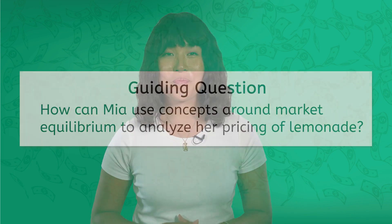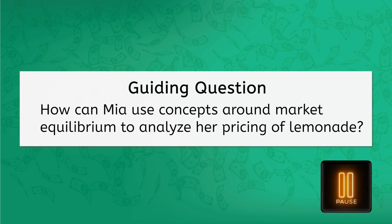Okay, let's get started with our first guiding question. How can Mia use concepts around market equilibrium to analyze her pricing of lemonade? You may want to consider market occurrences like shortages and surpluses. Pause the video while you answer the question. When you're finished, we can go over the answer.